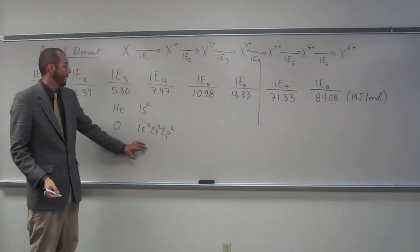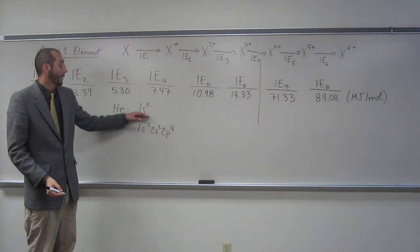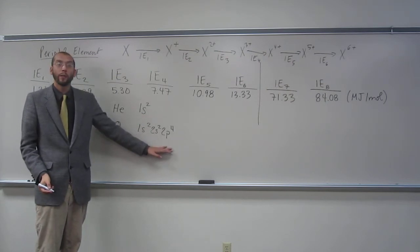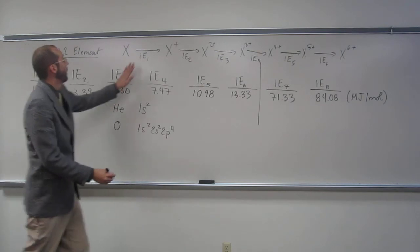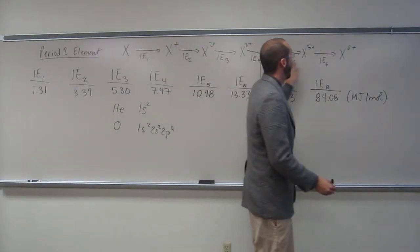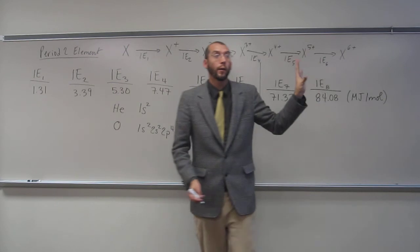Okay? So to get to the electron configuration 1s2, how many electrons do we have to lose? 6, right? Did we do that? 1, 2, 3, 4, 5, 6. Is everybody okay with that?